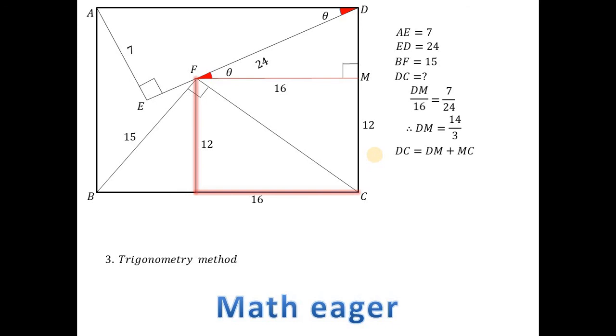So now, the DC is DM plus MC, and DM is 14/3, MC is 12. And by this, we get the magnitude of DC 50/3. So it is a very shortcut method to find the magnitude of DC.